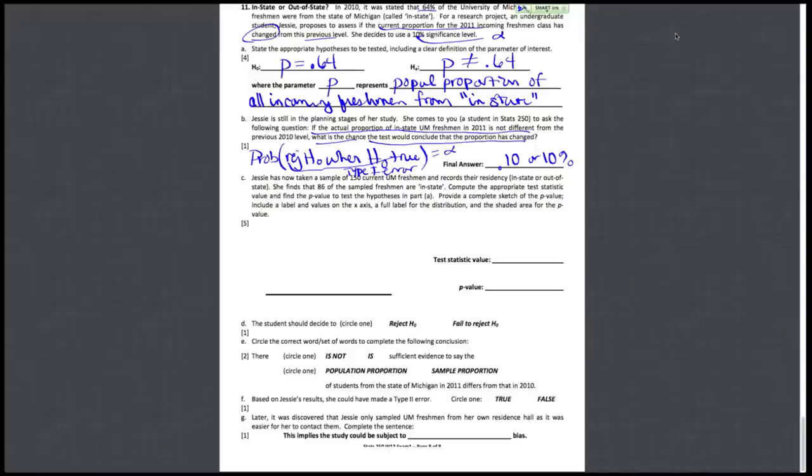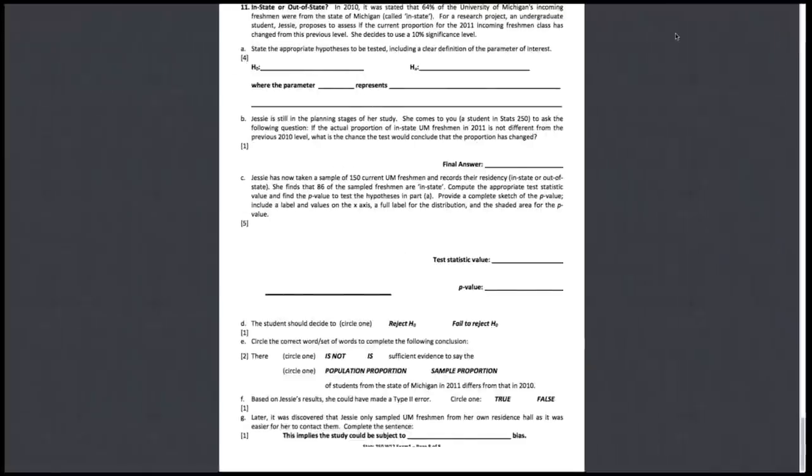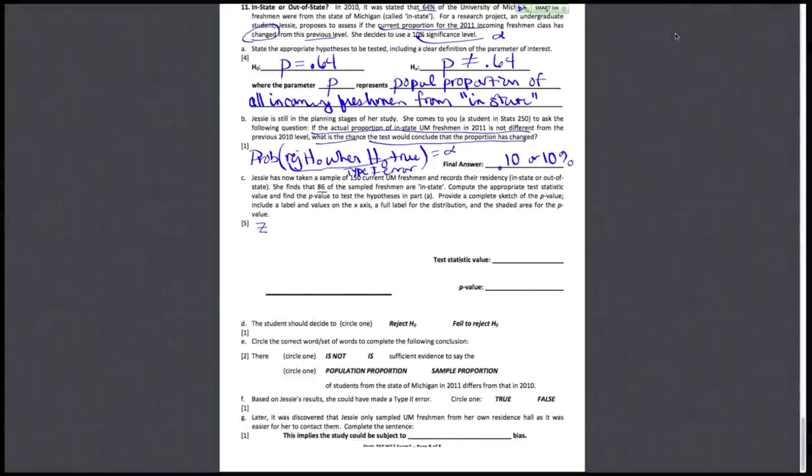She's going to take a look at her data. She's taken a sample of 150, and out of the 150 she finds 86 that are in-state. We're asked to basically conduct the test, at least get to that p-value stage. We are doing a one-sample z-test. We have a large sample size of 150. We need to calculate this z-test statistic and then convert it to the corresponding probability value or p-value.